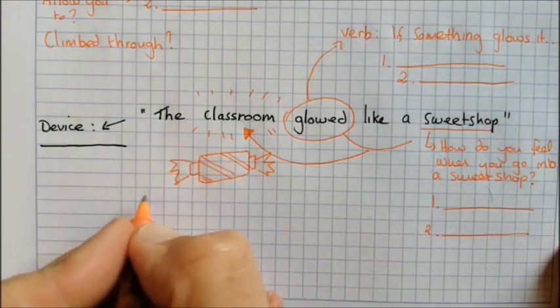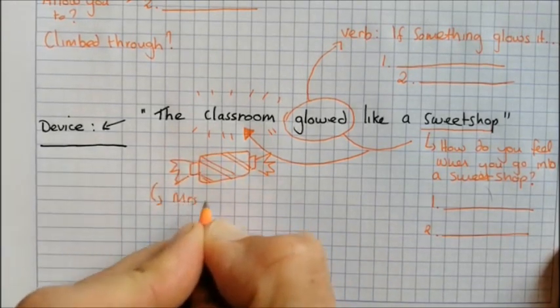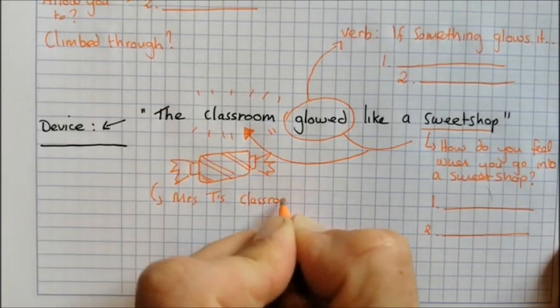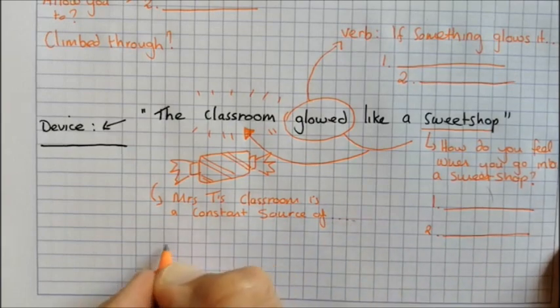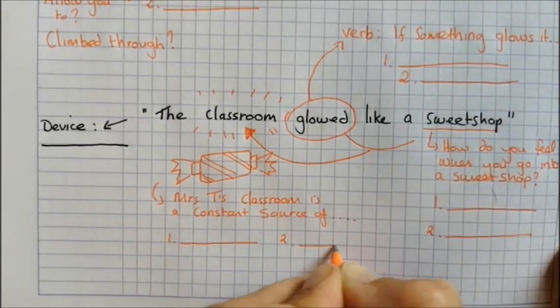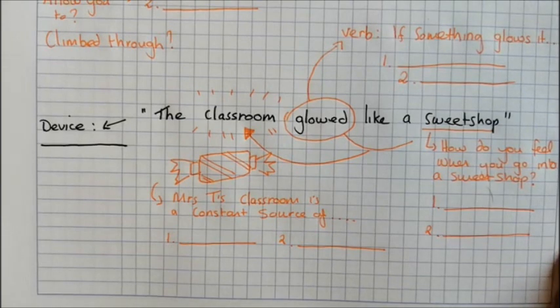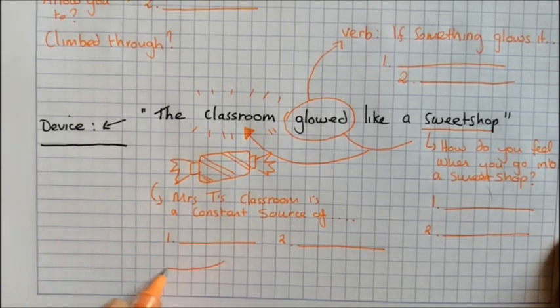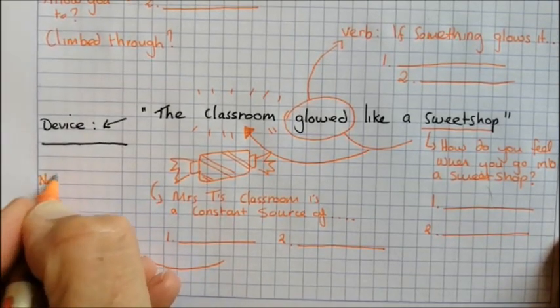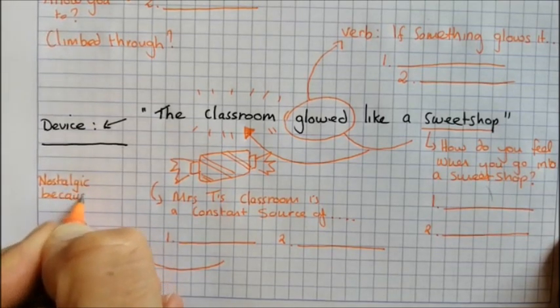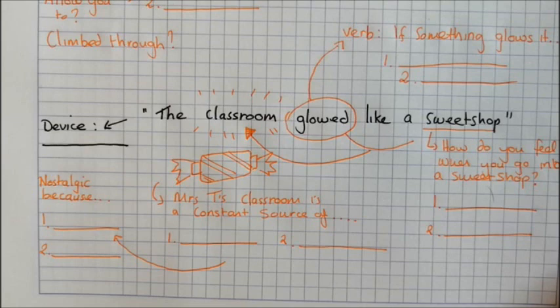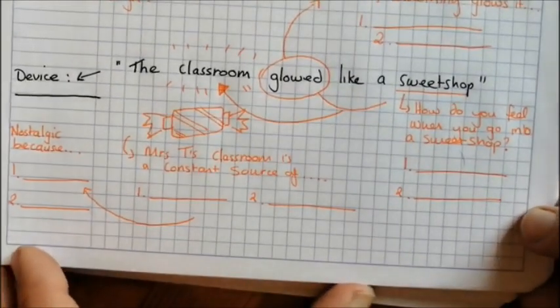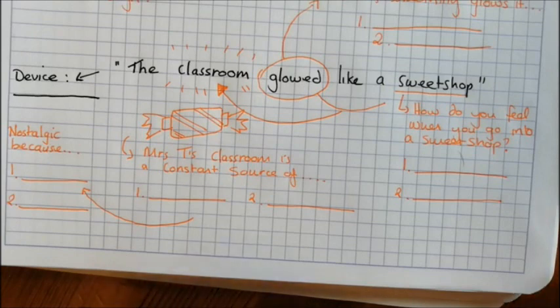Now that would suggest then that Mrs. T's classroom is a constant source of what two things? And then once you've got that, this then tells us that it is nostalgic. Because, and then give me two reasons why this is nostalgic. Now if you were looking closely, there's a strange quote hidden in here.